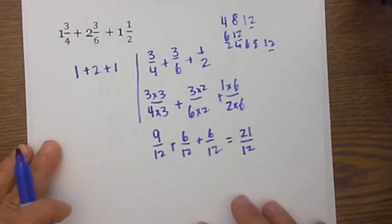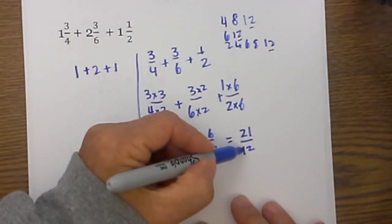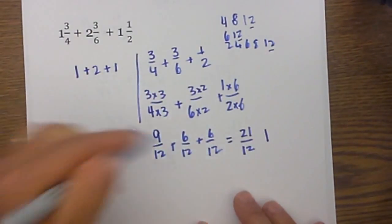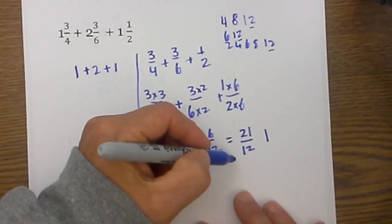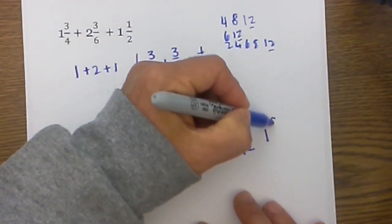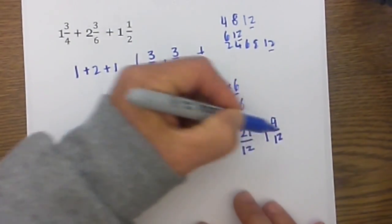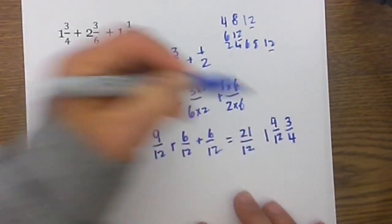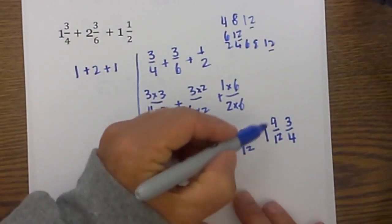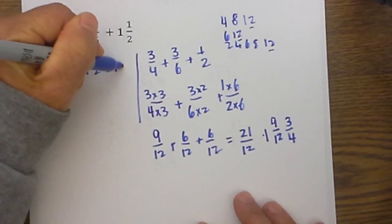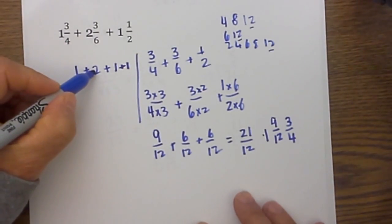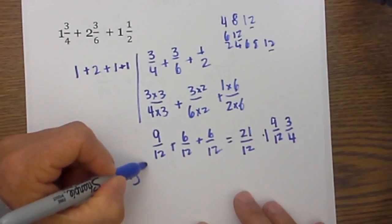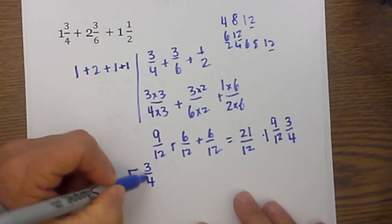I now have an improper fraction, so twelve goes into twenty-one one time with a remainder of nine twelfths, and nine twelfths can be reduced to three fourths. So I am going to move this one to this side. So now it becomes one plus two is three, plus one is four, plus one is five, and three fourths.